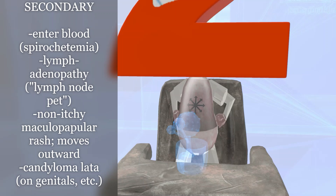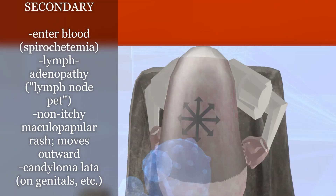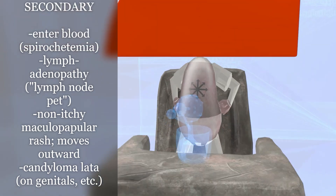When spirochetes attach and infect endothelial cells in small capillaries near the skin, it causes a non-itchy maculopapular rash — small bumps that are either flat or raised. The arrows going outward remind us that it begins with the trunk and then spreads outward toward the arms and legs, and even toward the palms and the soles.